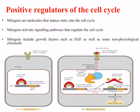If we want cells to divide in our body, they need to receive a positive signal. These signals are provided by substances known as mitogens — molecules that induce entry into the cell cycle. A cell that's resting will remain in a resting state unless it receives a mitogen signal. Mitogens activate signalling pathways that regulate the cell cycle and include things like growth factors such as epidermal growth factor, as well as non-physiological chemicals that can induce cell proliferation.